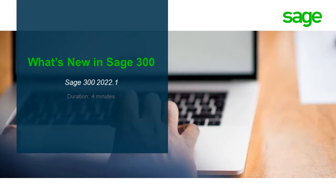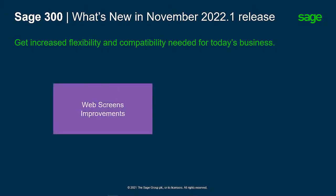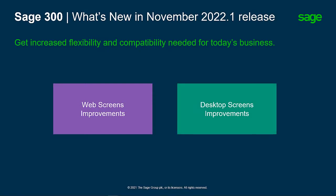Welcome to this video. Over the next few minutes, we will show you what's new in Sage 300 version 2022 Product Update 1. Sage 300 2022 Product Update 1 offers users exciting features that guarantee increased flexibility and capability needed for today's business, presenting additional functionalities and superior user experience through web screens improvements and desktop screens improvements.